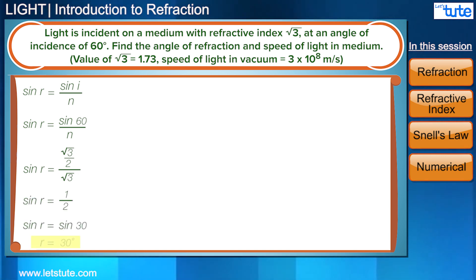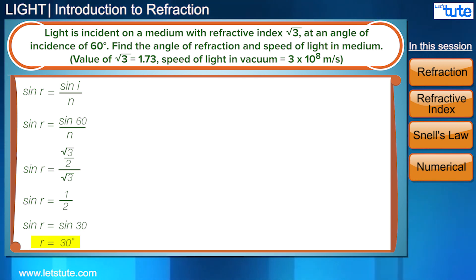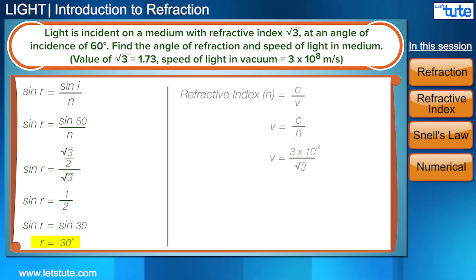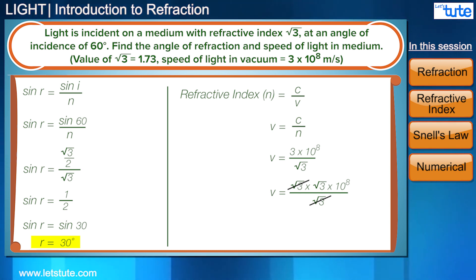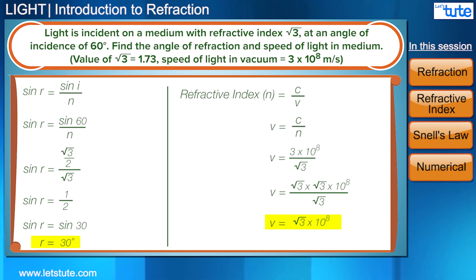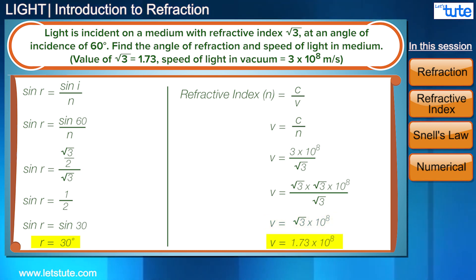Now to find the speed of light in the medium, we use the definition of refractive index. Using the formula, we can write 3 as √3 × √3, and cancel one √3 out. Thus the speed of light in the medium is √3 × 10⁸, or 1.73 × 10⁸ meters per second.